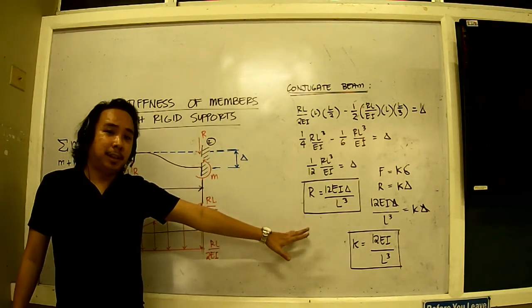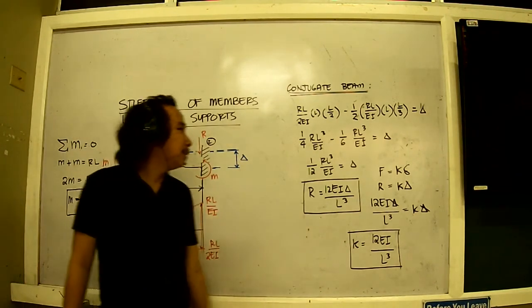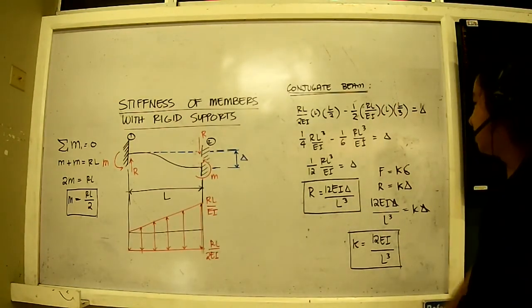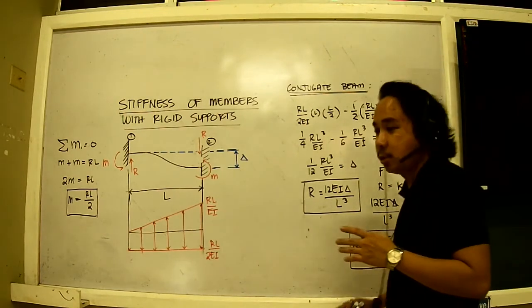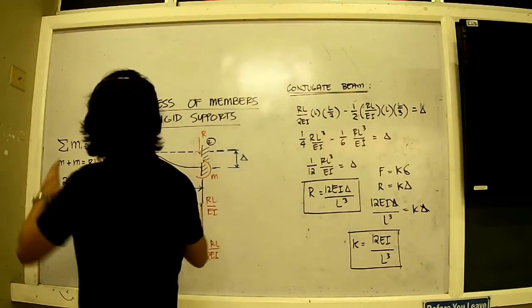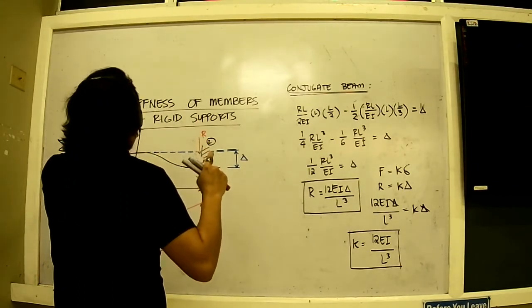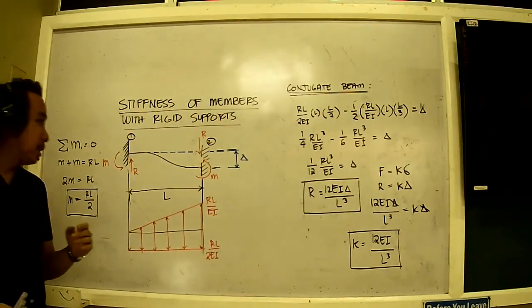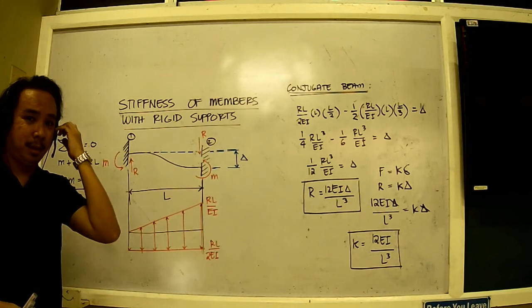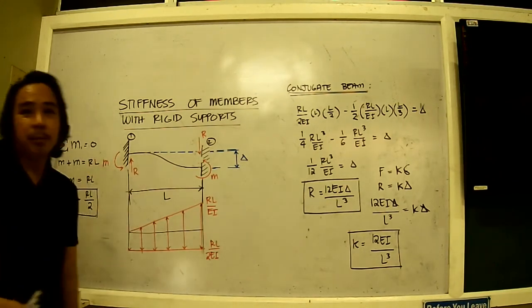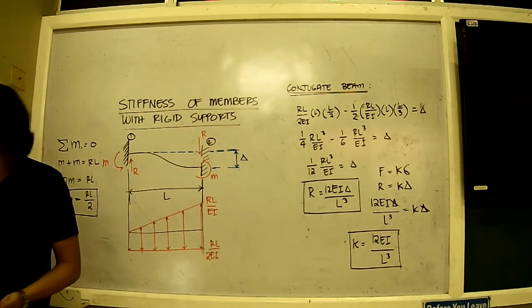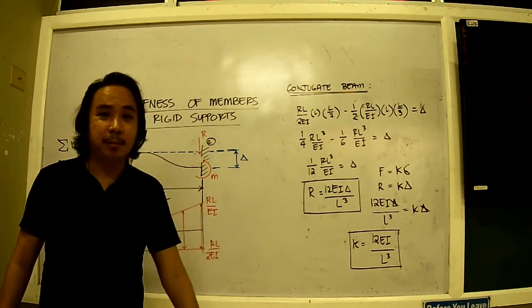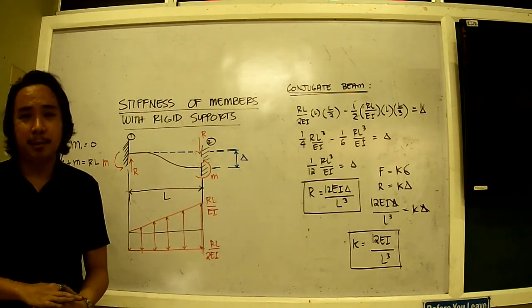So kindly take note of this expression over here. This is how we derive the equations. Now this is only good for situations in which we can define that the two endpoints of the member here are rigid. This is very common when we're dealing with RC structures. Therefore, we'll be using this formula more than once, at least most of the time.